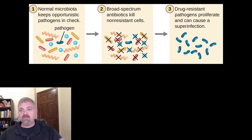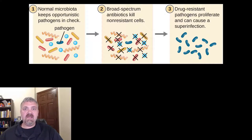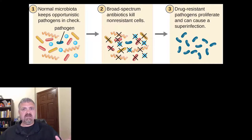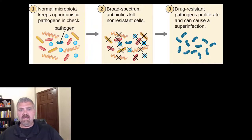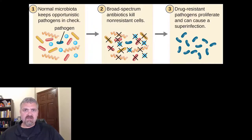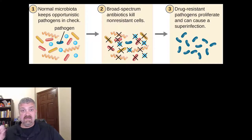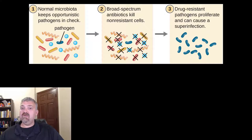The pros would be that you're hopefully more likely to actually kill the pathogen, but the con is there's going to be a lot more collateral damage. Broad spectrum antibiotics are like firebombing an entire city, whereas a narrow spectrum antibiotic — or maybe something in the future like phage therapy — would be like a laser-guided missile strike for the one target that you need.